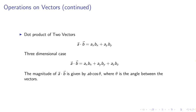Operations on vectors continued. We can take the dot product of two vectors, which will be given as A dot B equals Ax Bx plus Ay By. In the three dimensional case, A dot B will be given by Ax Bx plus Ay By plus Az Bz. The magnitude of A dot B is given by A, B cosine theta, where theta is the angle between the vectors.